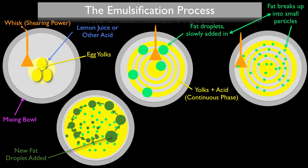This is something that Harold McGee calls the "fat mill" in his book On Food and Cooking. We're going to label it the "dispersion mill" because technically speaking this works with any dispersed phase — whether your dispersed phase is fat or water, this dispersion mill holds true.